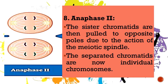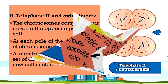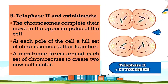In anaphase 2, the sister chromatids are then pulled to opposite poles due to the action of the meiotic spindle. The separated chromatids are now individual chromosomes. In telophase 2 and cytokinesis, the chromosomes complete their move to the opposite poles of the cell. At each pole, a full set of chromosomes gathers together and a membrane forms around each set of chromosomes to create two new cell nuclei.